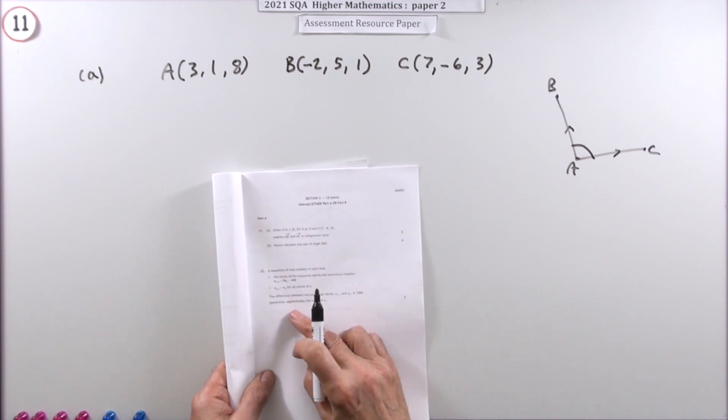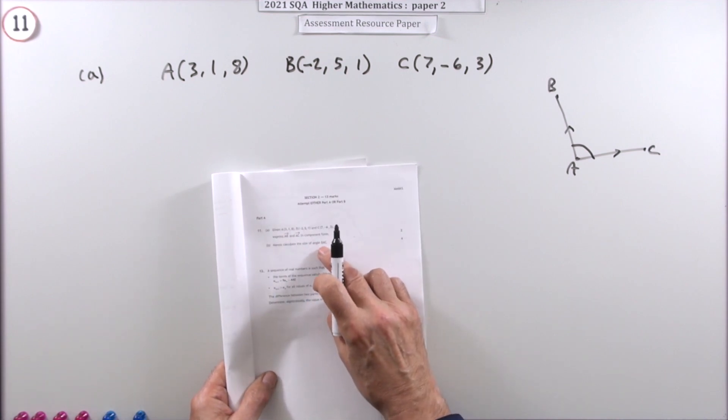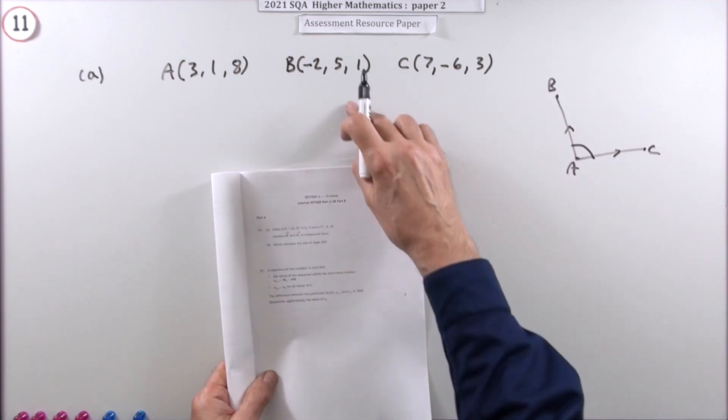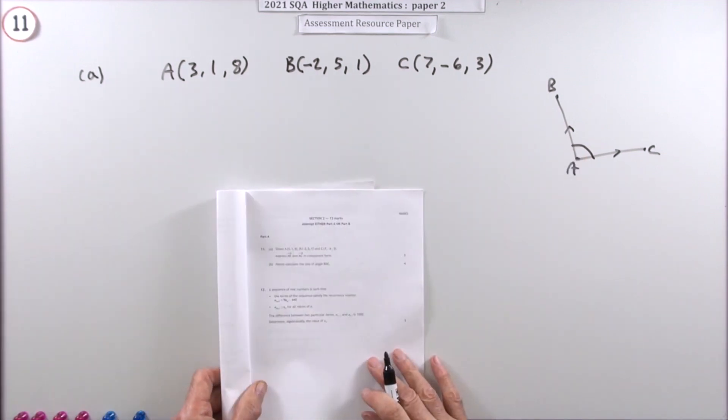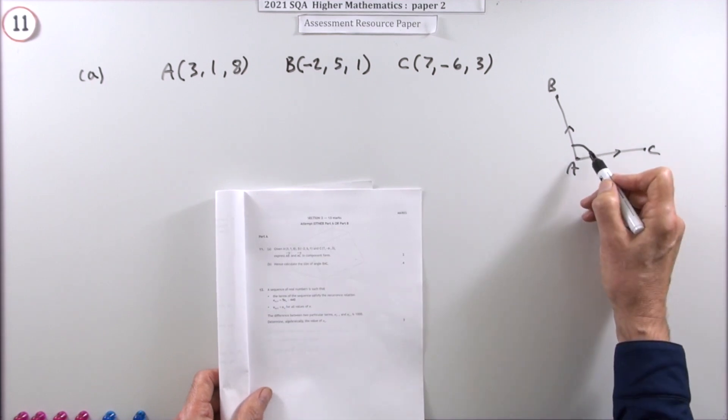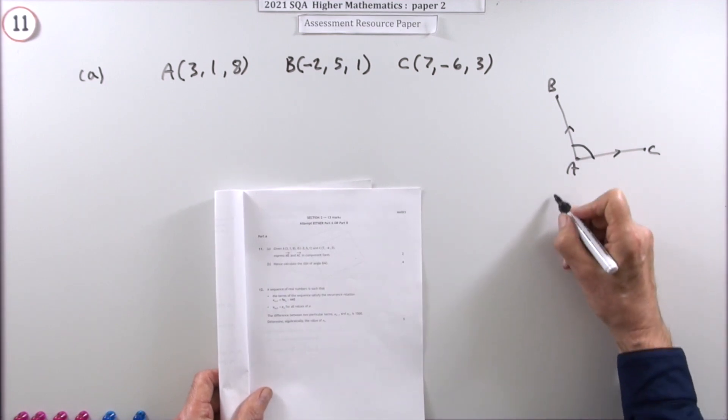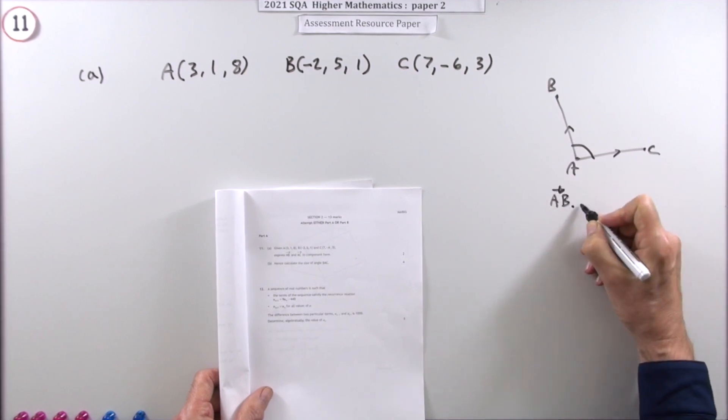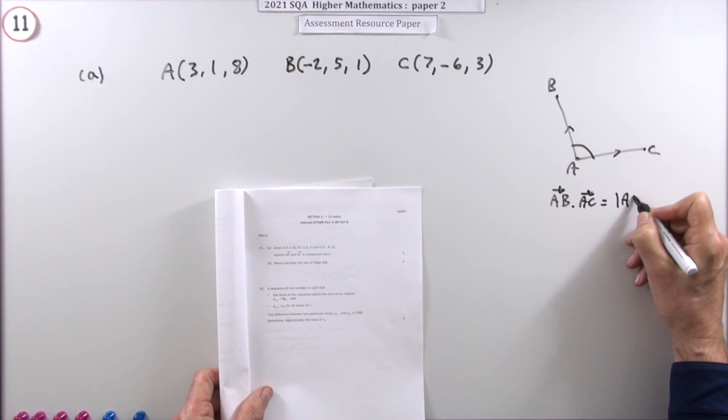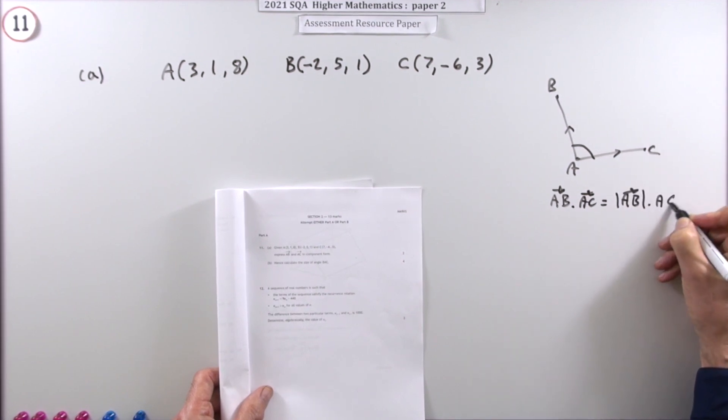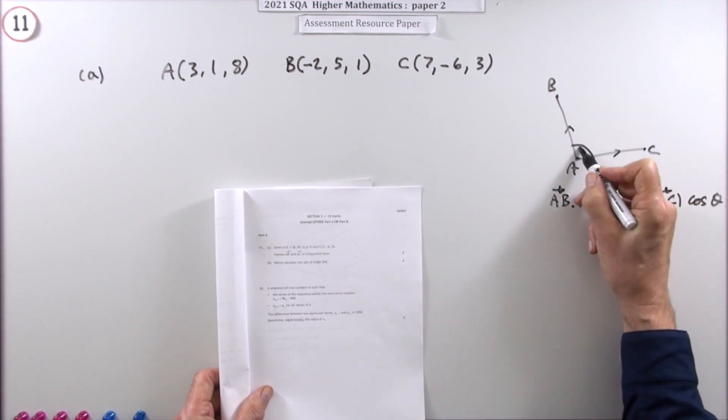You need the vectors that radiate away from the angle. So you'd want the vectors AB and AC. And that's why they asked for that in part A. Because if they want the size of angle BAC, then the first thing you have to do is find the appropriate vectors. So they've put that down as a separate question. Maybe just to make sure you're all in the right tracks. You're going to use the fact that the scalar product AB dot AC is equal to the magnitude of AB times the magnitude of AC times the cosine of the angle between them. Just call that theta.